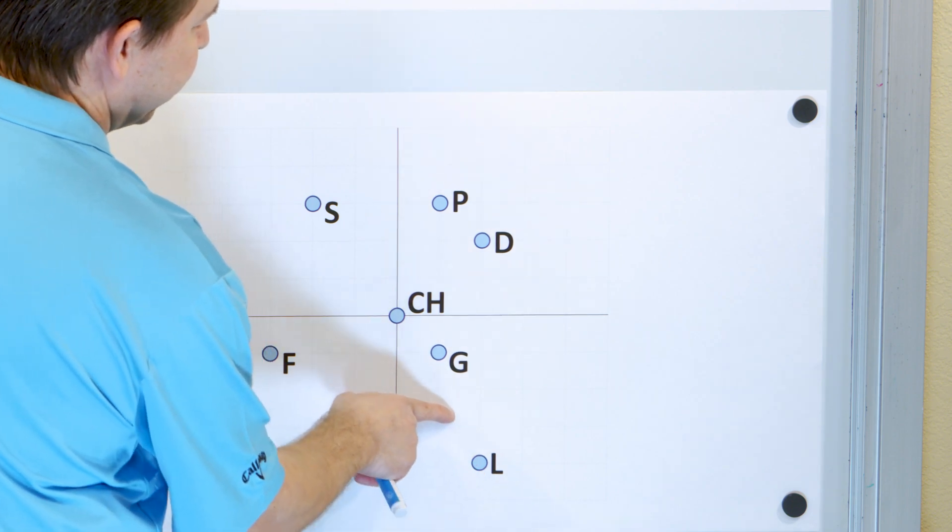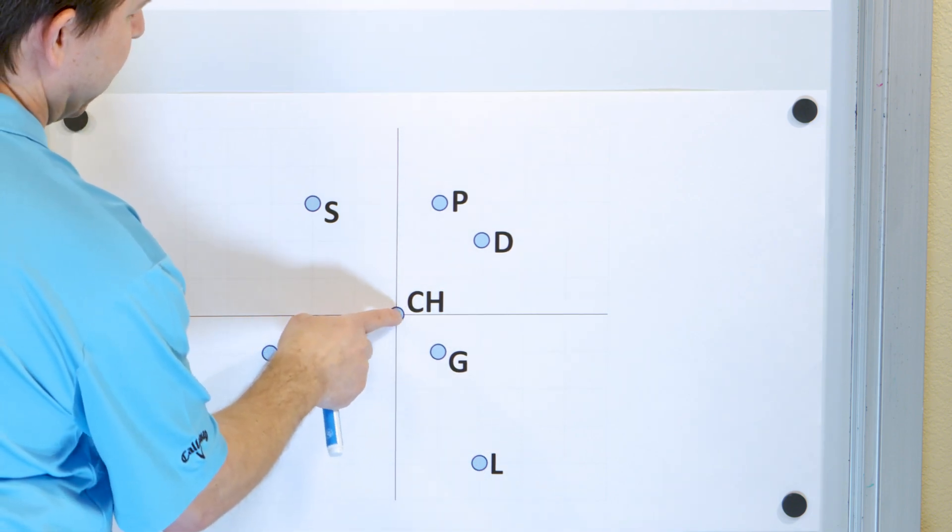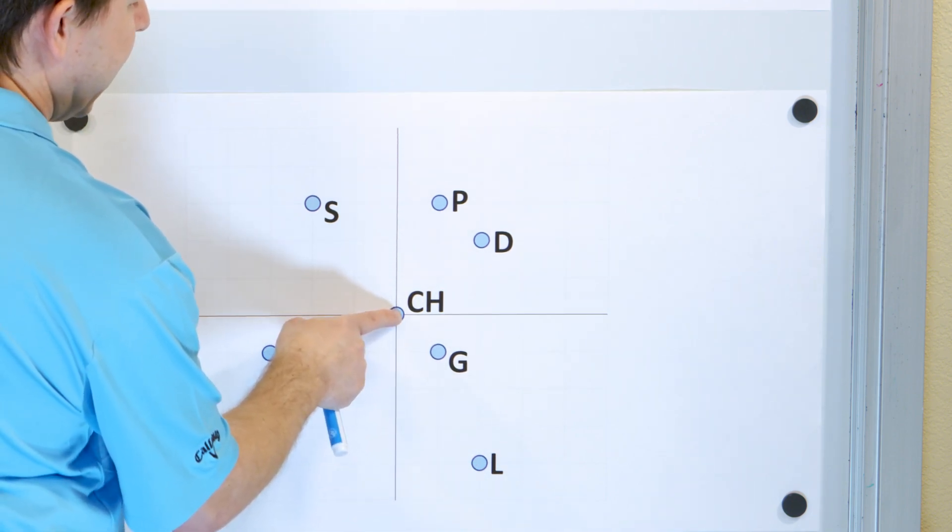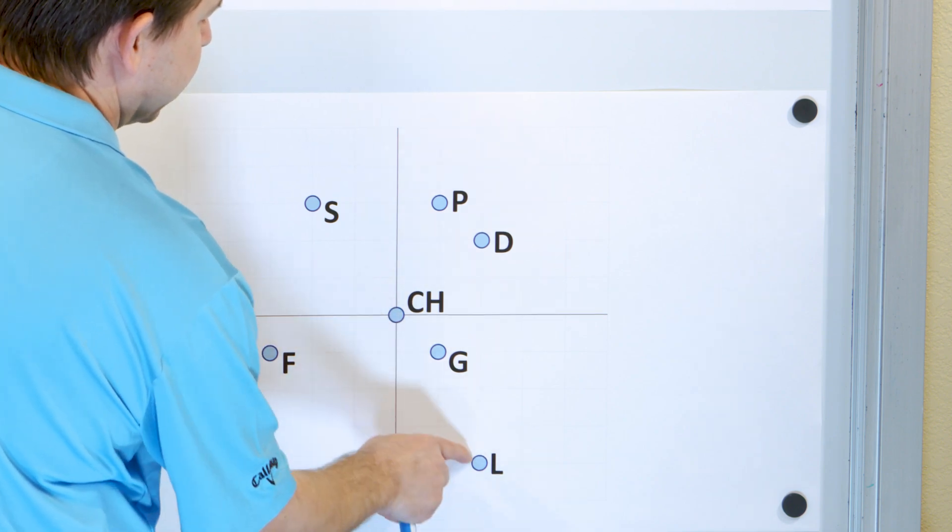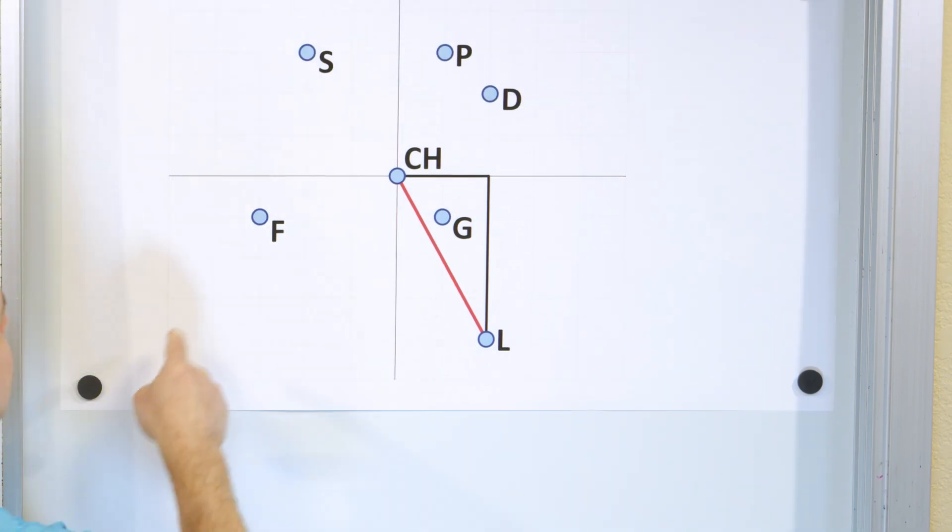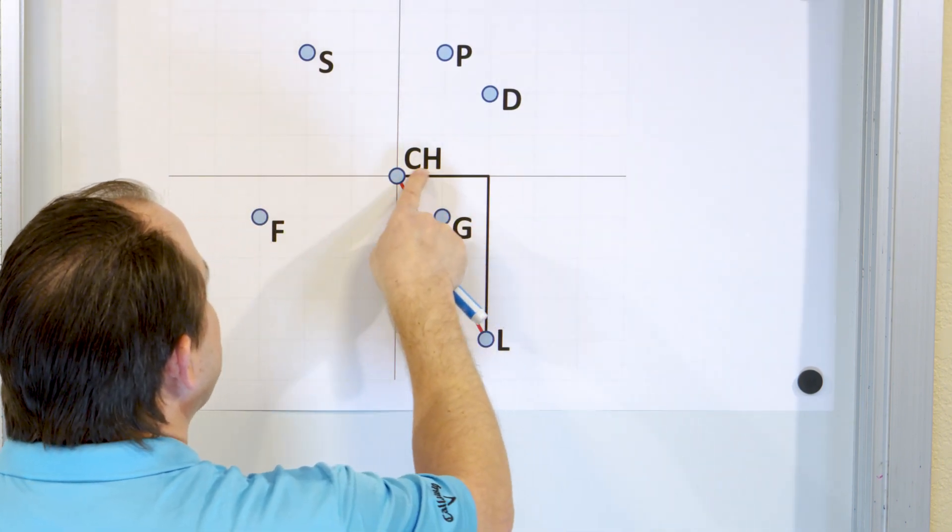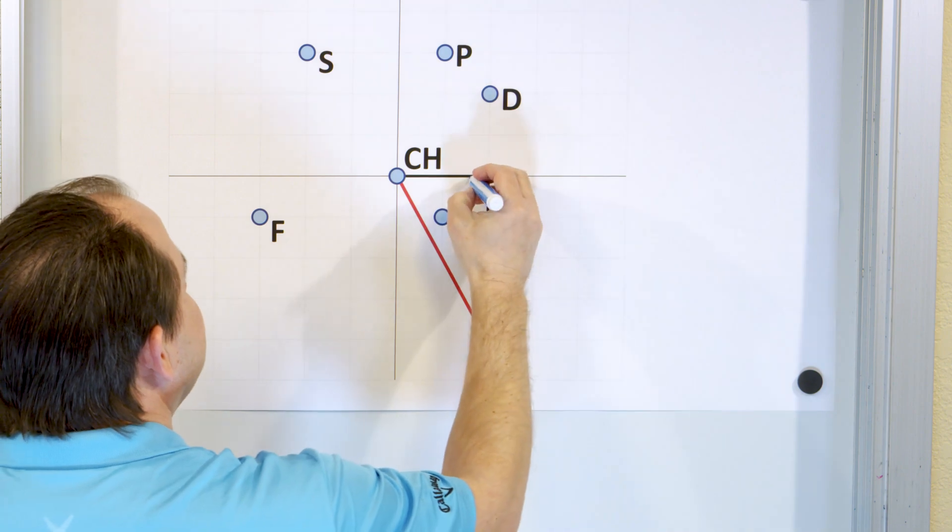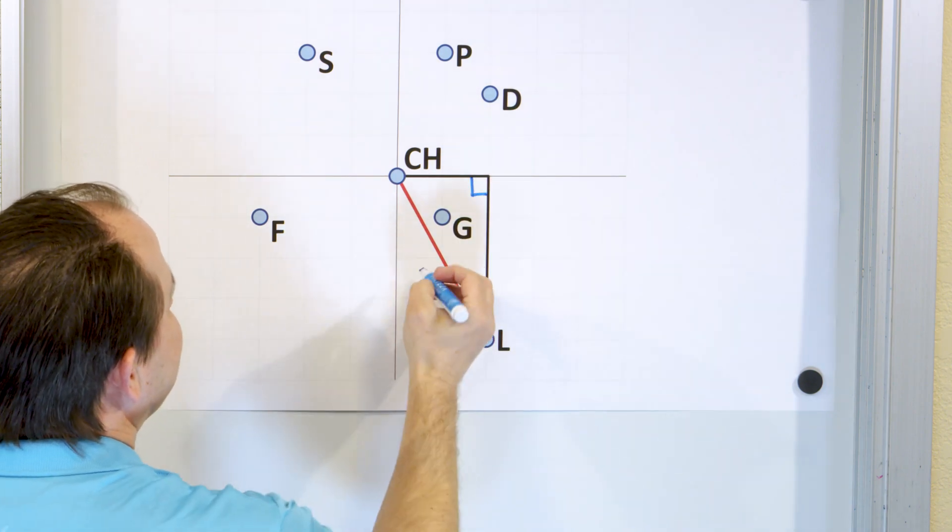So the library is here, the city hall is here. The city hall is at the very center of town and the library is diagonally down this direction. So let's draw a picture of what we're trying to actually find. We're trying to find this distance here, so we're going to form a triangle out of it. And of course this is a 90 degree angle, so it's a right triangle.